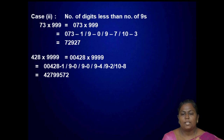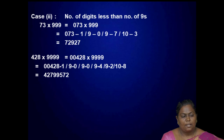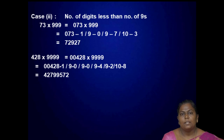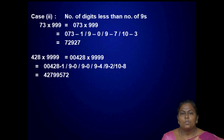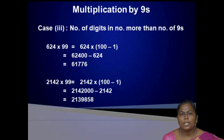Case 2: number of digits less than number of nines. For example, 73 into 999. Here 73 is a two-digit number and 999 is three digits, so add a leading 0: 073 into 999. Reduce by 1: 072. Then 9 minus 0 is 9, 9 minus 7 is 2, 10 minus 3 is 7. So the result is 72927.